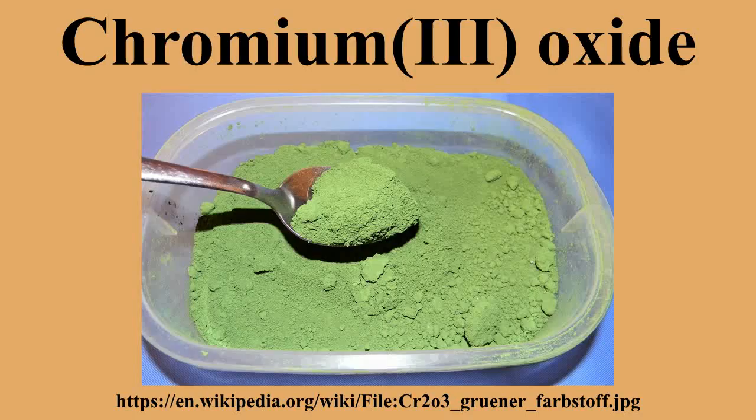Cr2O3 is also hygroscopic. It occurs naturally as the mineral eskolaite, which is found in chromium-rich tremolite skarns, metachert/ultramafic rocks, and chlorite veins. Eskolaite is also a rare component of chondrite meteorites. The mineral is named after Finnish geologist Pentti Eskola.